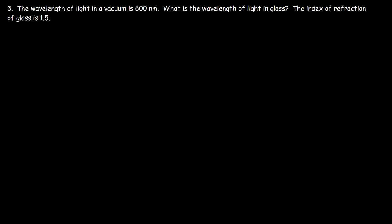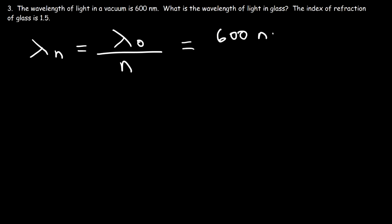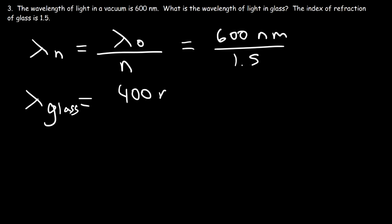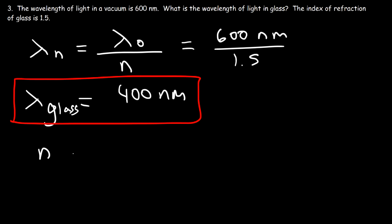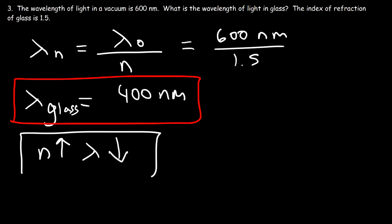Number 3: the wavelength of light in a vacuum is 600 nanometers. What is the wavelength of light in glass? We're given the index of refraction of glass, which is 1.5. The wavelength of light in a material is equal to the wavelength of light in a vacuum divided by the index of refraction. So it's going to be 600 nanometers divided by 1.5, which gives 400 nanometers. As the index of refraction increases, the wavelength in that material decreases.